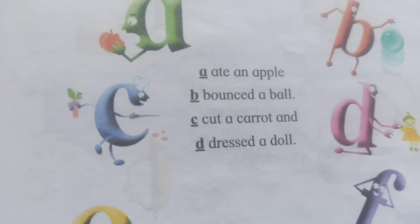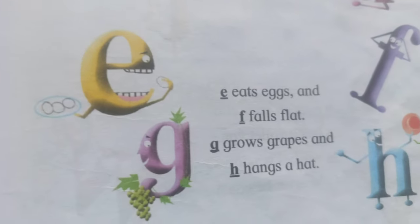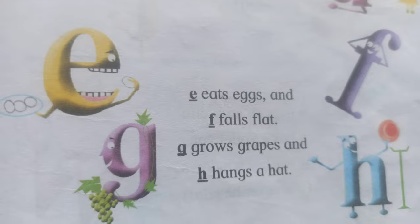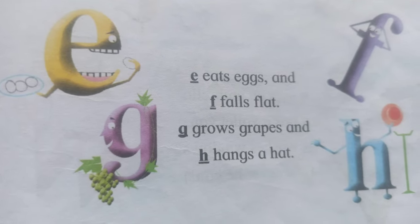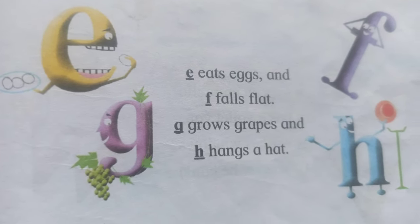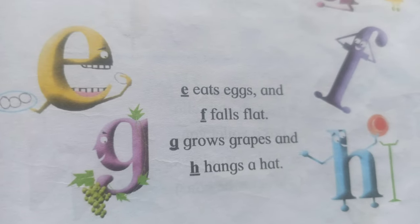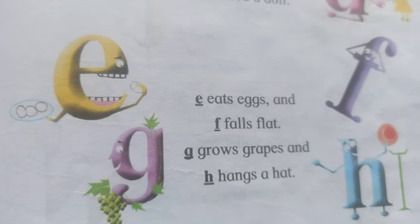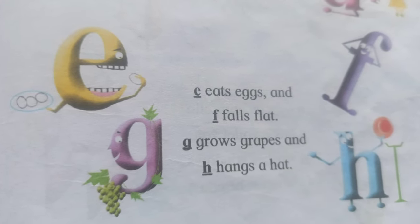E — it's X, and F — falls flat, G — grows grips, and H — hangs a hat. E — it's X, and F — falls flat, G — grows grips, and H — hangs a hat.